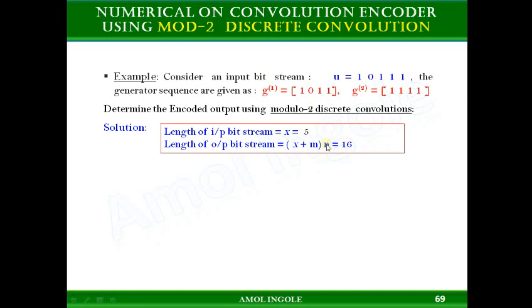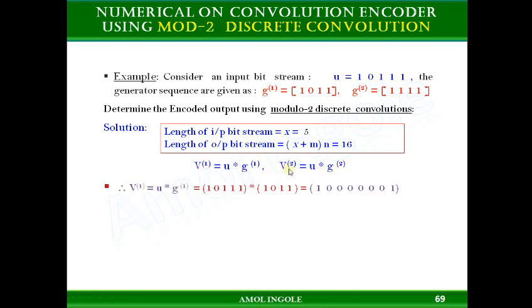n = 2 in this case because there are two generator sequences, meaning there will be two outputs. So 2 × (x + m) = 2 × (5 + 3) = 2 × 8 = 16, so there will be 16 bits in the output. We need to find outputs v1 and v2.